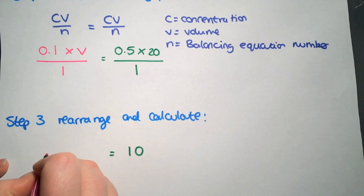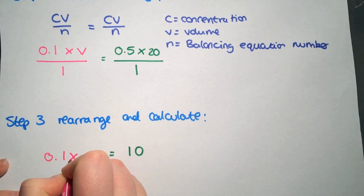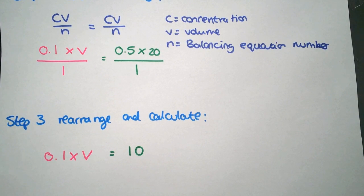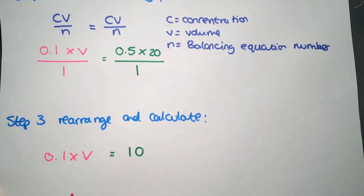As it's divided by 1, that is just the same as 0.1 times V. We now need to rearrange for V. So the easiest way to do that is to just divide each side by 0.1. So that will give you V equals 10 divided by 0.1. So your final volume of hydrochloric acid will be 100 centimeters cubed.